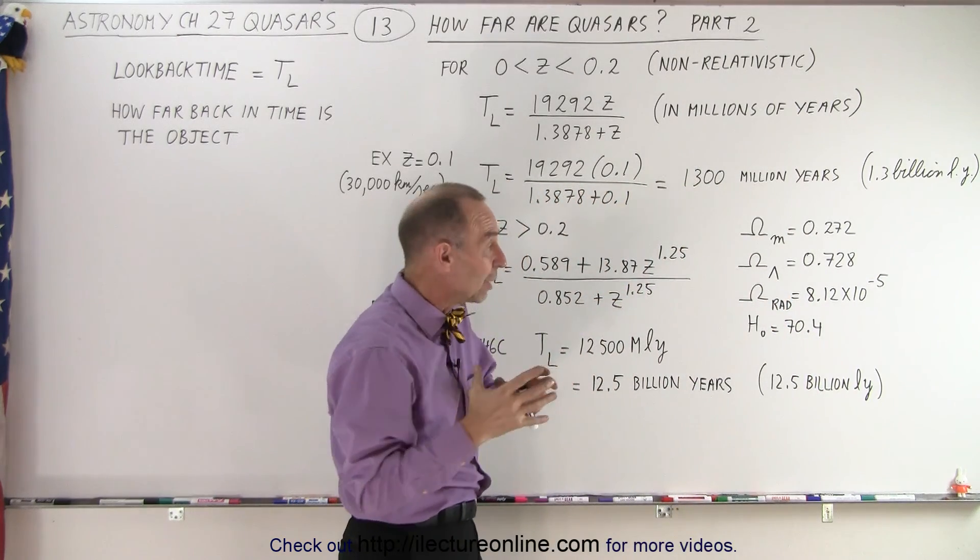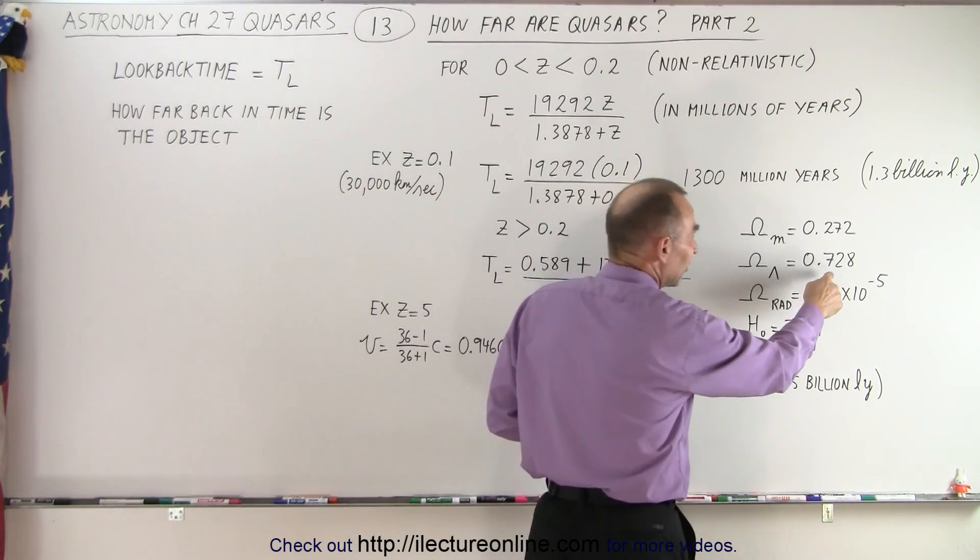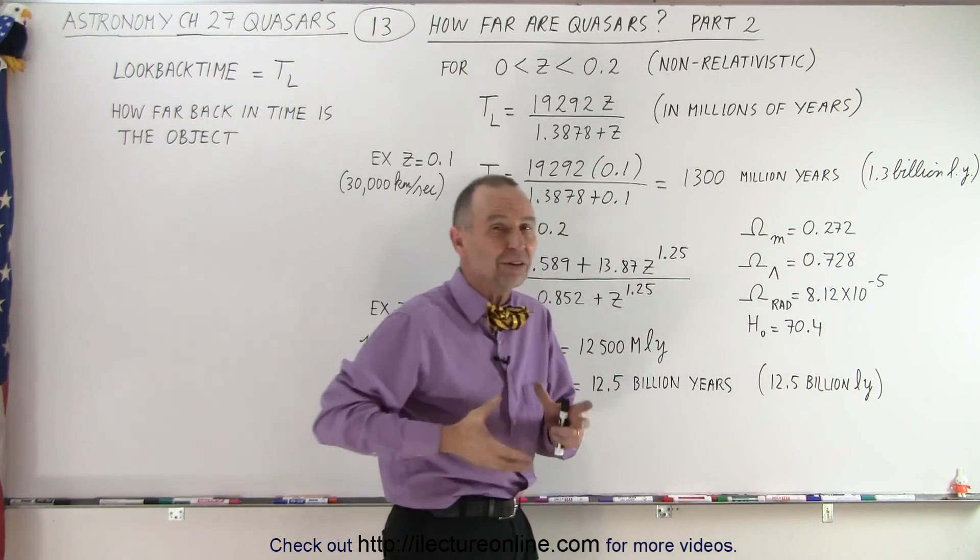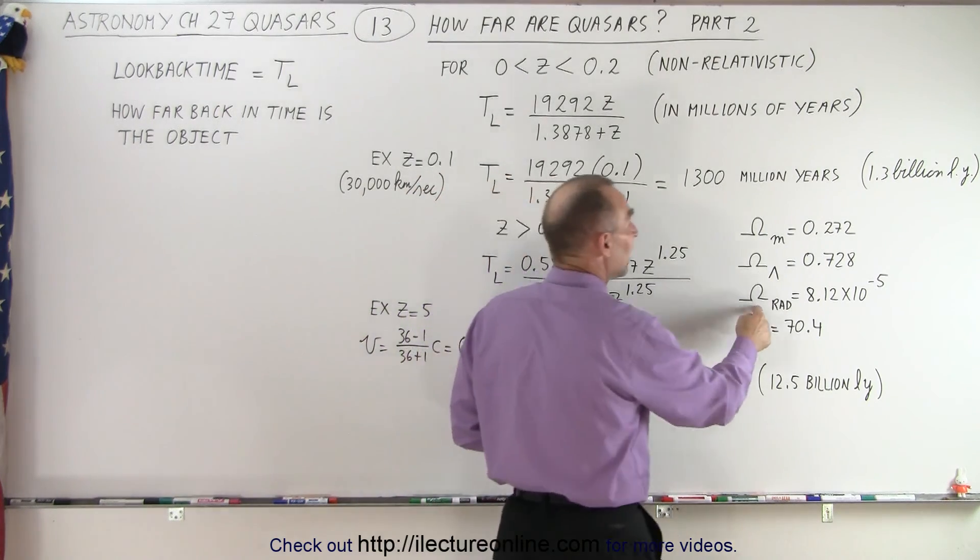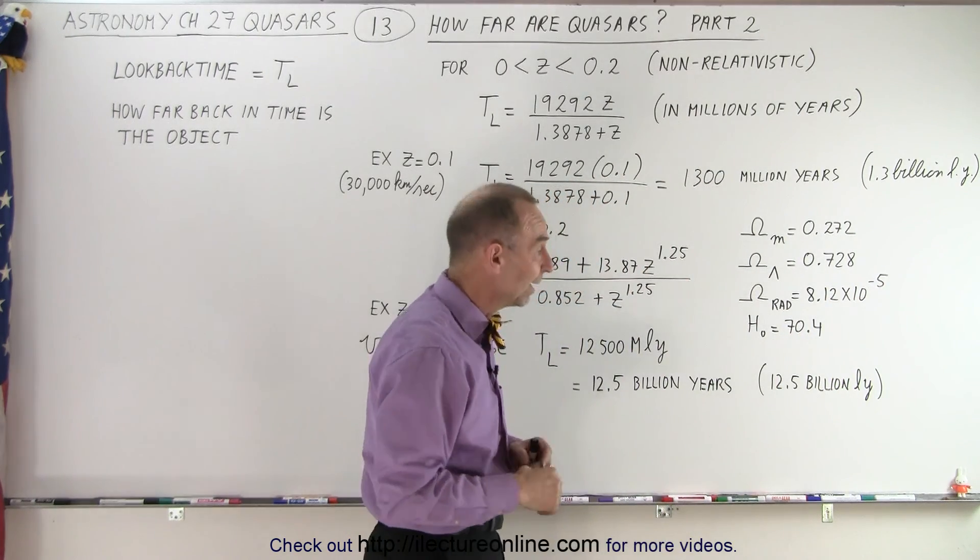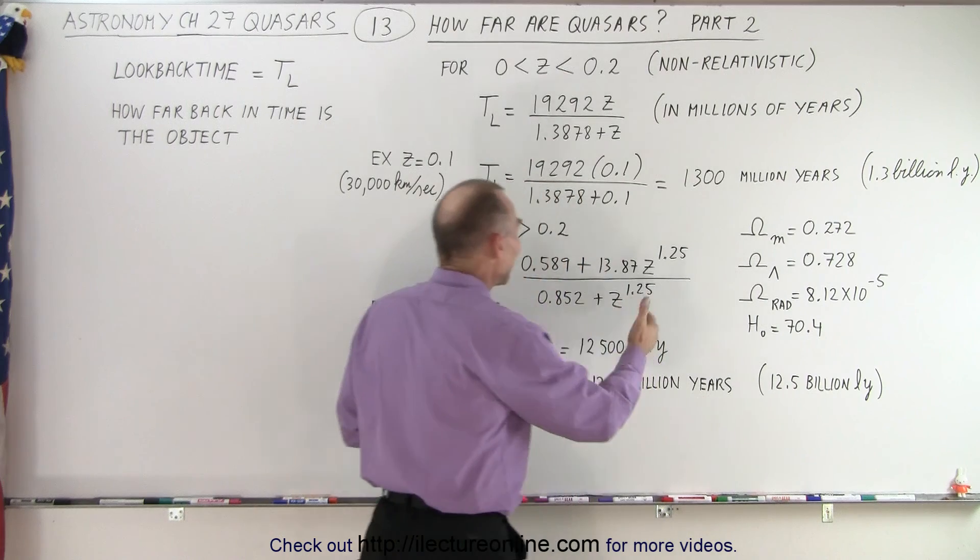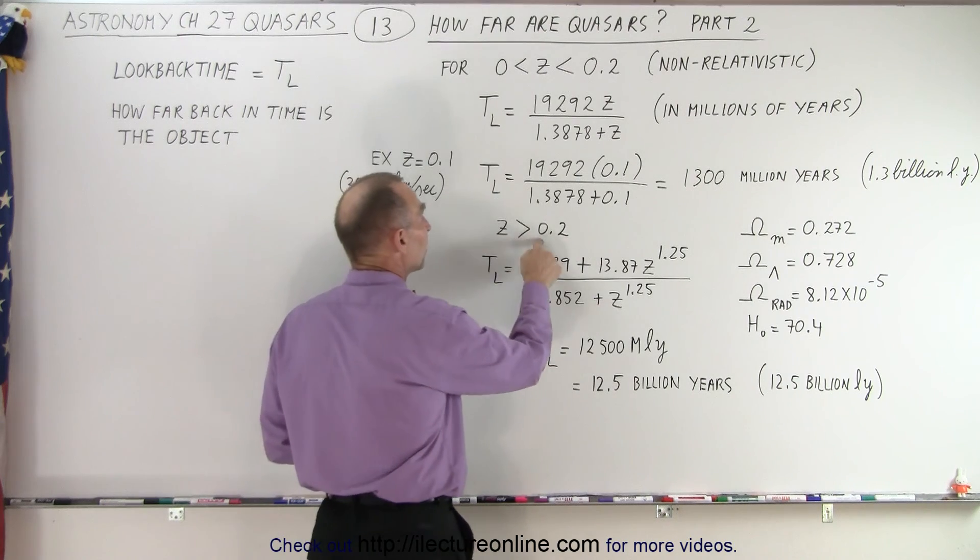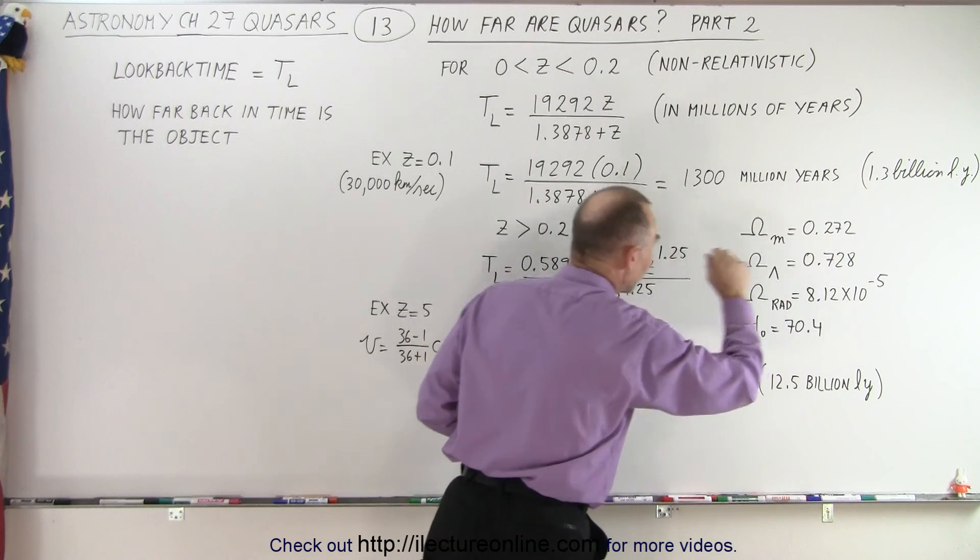Then we need the energy contained within all the dark energy. So we estimate that's about 70% of all the energy is dark energy, and about 30% of all the energy is the mass. Of course, it varies depending upon who you talk to and what experiments they've done. And then you calculate all the energy contained within the radiation roaming through the universe, including all the neutrinos. And then you come up with some sort of estimate for the Hubble constant. You plug all that into an equation, and that then calculates these particular coefficients. So then if z is larger than 0.2, you use this equation right here with these coefficients.